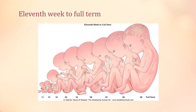This diagram shows the growth of the fetus after the embryonic period. First there is an increase in head size, with the body very small in proportion to the head, and then it shows how the fetus grows till full term.